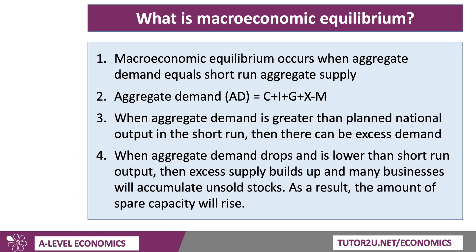Equilibrium at a macro level occurs when aggregate demand for goods and services equals short-run aggregate supply. In other words, the total spending on goods and services in the economy is in balance with the level of national output. A quick reminder that the formula for aggregate demand is C plus I plus G plus X minus M. C plus I plus G is domestic demand — consumption, investment and government spending — and X minus M is the net trade balance.